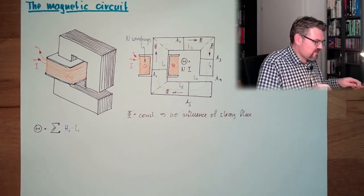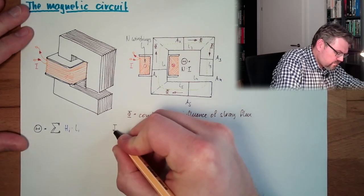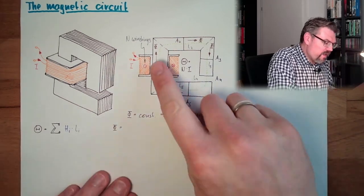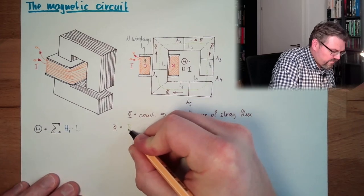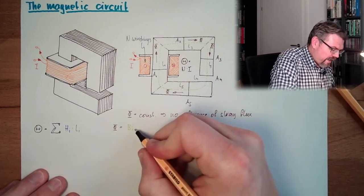And since phi is constant, we can say phi equals the flux density B multiplied by A. Then here we have a certain flux density in every area. It might be different.